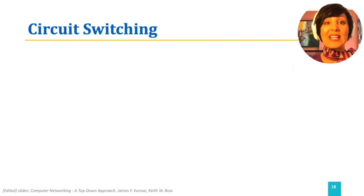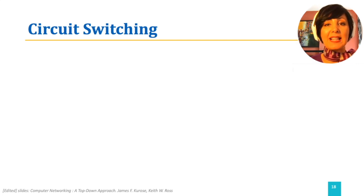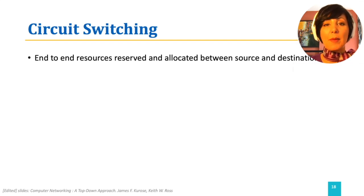Traditional telephone networks are examples of circuit-switched networks. When Alice wants to connect with Bob in a traditional telephone network for a voice conversation, before the conversation can begin, the network establishes a connection between Alice and Bob. This connection is called a circuit. The end-to-end resources along this path are reserved between Alice and Bob.